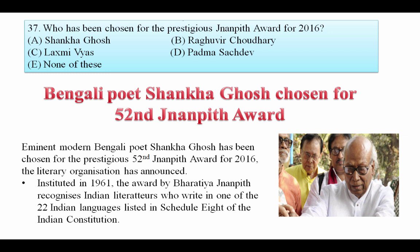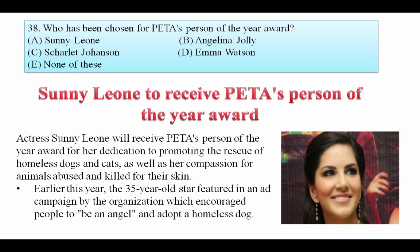Now let's see some awards. Who has been chosen for the prestigious Jnanpith Award for 2016? Eminent Bengali poet Shankha Ghosh has been chosen for the prestigious 52nd Jnanpith Award for 2016. The award, instituted in 1961 by Bharatiya Jnanpith, recognizes Indian writers who write in one of the 22 Indian languages listed in the 8th Schedule of the Indian Constitution. Your answer is Shankha Ghosh. Who has been chosen for the PETA Person of the Year Award? Actor Sunny Leone will receive the PETA Person of the Year Award for her dedication to promoting rescue of homeless dogs and cats and compensation for animals abused or killed for their skin.